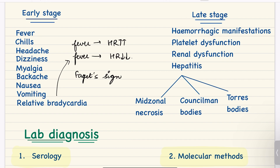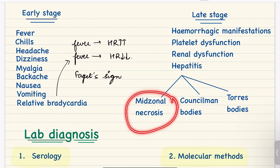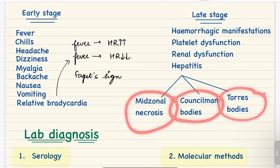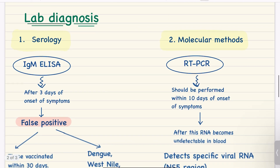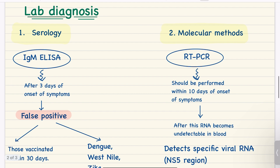In the late stage, hemorrhagic manifestations are present; platelet dysfunction, renal dysfunction, and hepatitis can also be seen. On pathological examination, we can see mid-zonal necrosis, Councilman bodies, and Torres bodies.